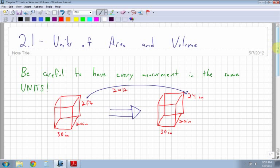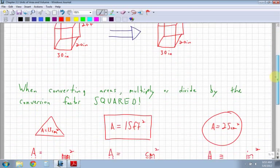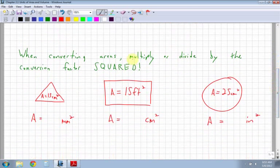So, 2.1: Units of Area and Volume. When converting areas, multiply or divide by the conversion factor squared, depending on whether you're going to a bigger or smaller measurement. Be really careful with that.